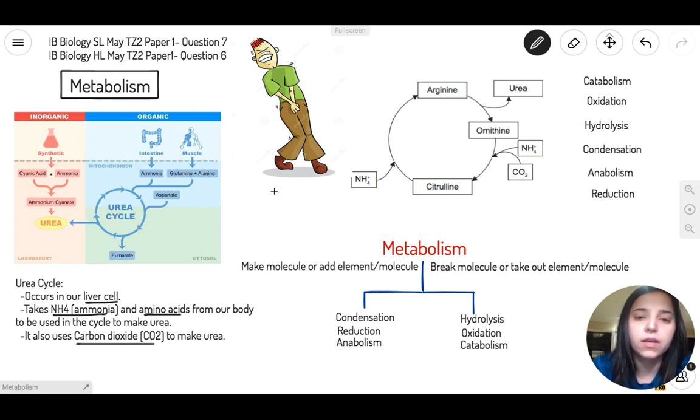Now why are we talking about this? Because we have to understand some words: the big words such as metabolism, condensation, reduction, anabolism, hydrolysis, oxidation, and catabolism. These are all big words, but really they're not that hard to understand. Metabolism consists of all of these. It's basically all the types of chemical reactions that happen in your body. If you're breaking things or you're making things, it's metabolism.